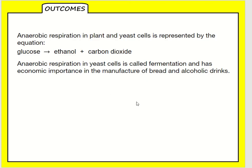Anaerobic respiration in plant and yeast cells is represented by this equation. Aerobic respiration in yeast cells is called fermentation and has economic importance in the manufacture of bread and alcoholic drinks. We use yeast to produce bread and wine and spirits. That's why it has economic importance because we can sell those to make money.